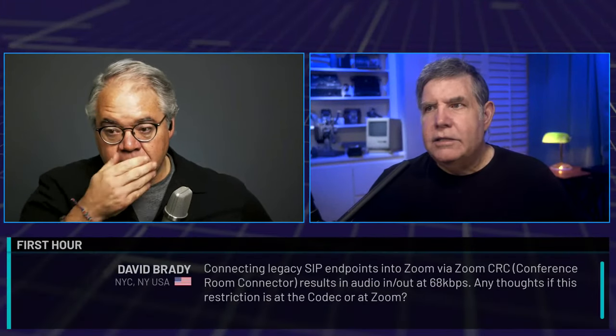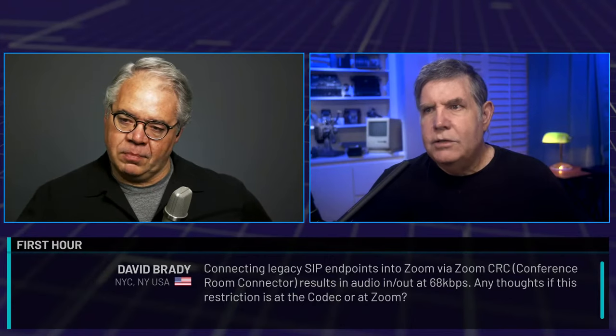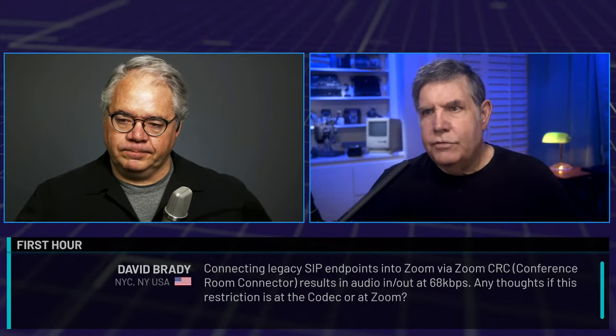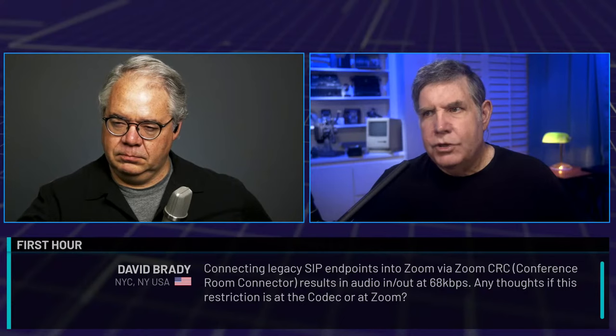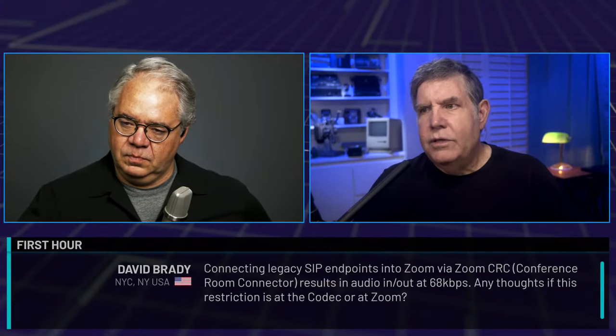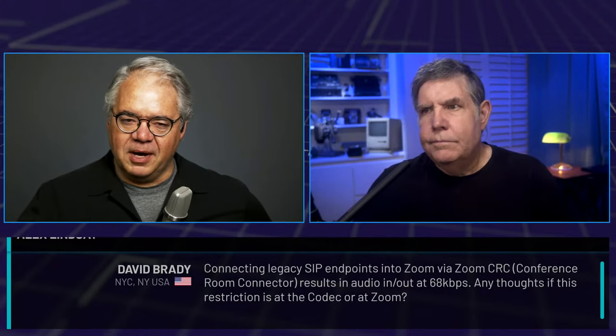David Brady in New York asks about connecting legacy SIP endpoints into Zoom via the Conference Room Connector, resulting in audio at 68 kilobits per second. He wonders if this restriction is at the codec level or at Zoom. The answer: it's almost certainly at the codec level. SIP connections are really optimized for voice and not designed to provide any higher quality than that — about 98–99% certain it's the codec itself.